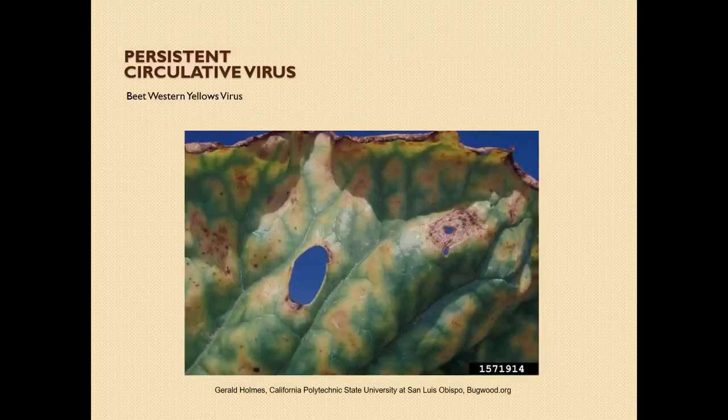Here's beet western yellows virus. This is a persistent circulative virus spread through green peach aphid, which can retain it for the life of the insect.